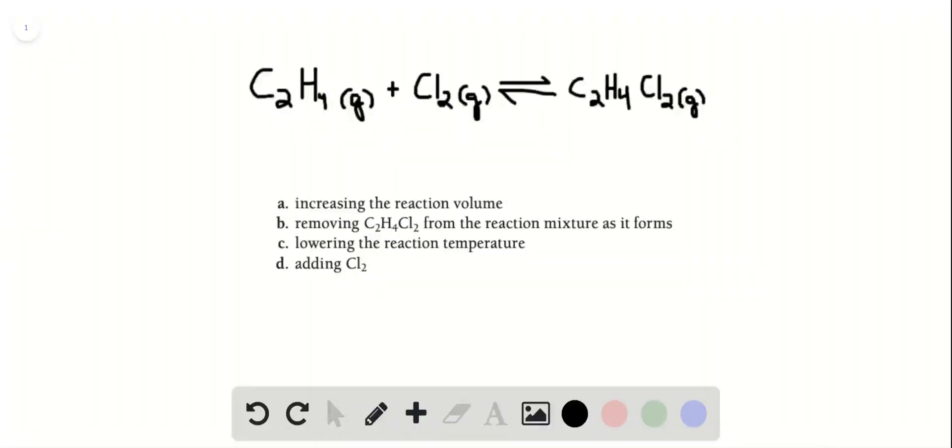This question asks us to consider the exothermic reaction where C2H4 binds with Cl2 to form C2H4Cl2. It asks, if we were trying to maximize the amount of C2H4Cl2 produced, which tactic might we try? You can assume that the reaction mixture reaches equilibrium. Here are the four ways that we might do this. Let's go through each of them and see what they would do.